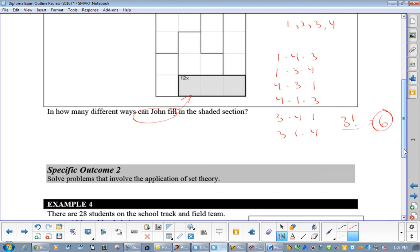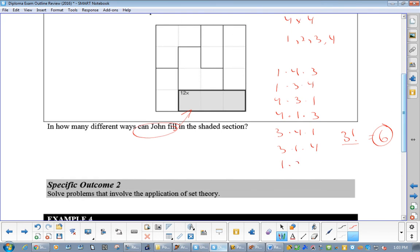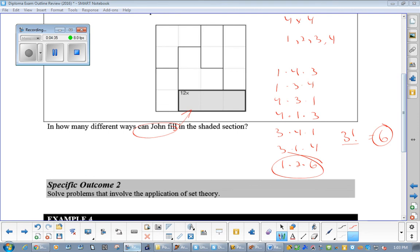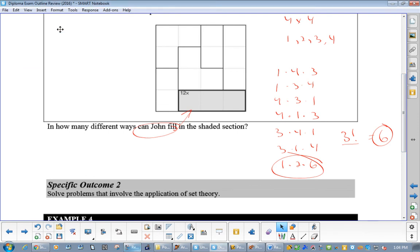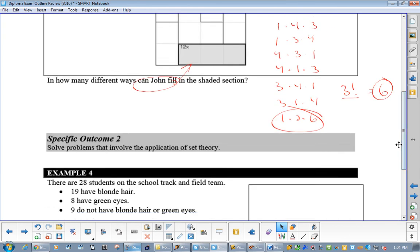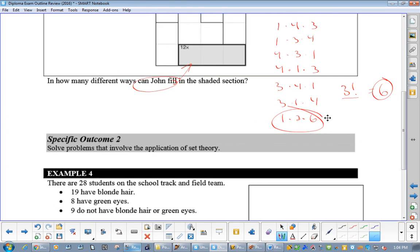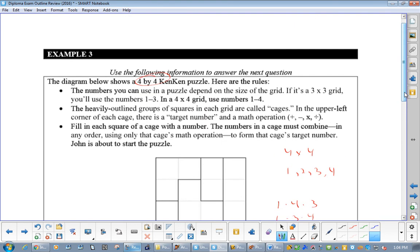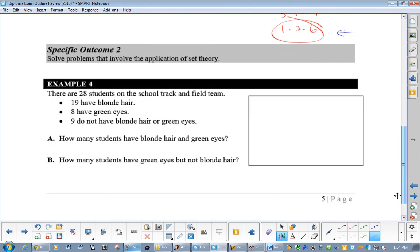Here's where they're going to get you, though. People are going to try 1 times 2 times 6. So, this is the problem. 1 times 2 times 6, people will try because they do multiply to 12. But, you're not allowed to use 6. You can only use the numbers 1 to 4. So, it is the common error that some students use.